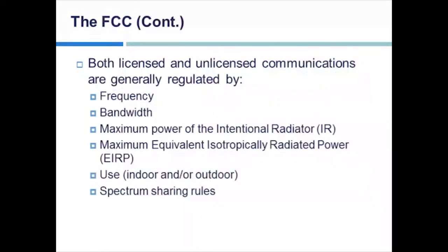When we talk about any communications, any frequencies, licensed or unlicensed, the FCC still has regulations we must abide by. These include the frequency being used, bandwidth information, and something we'll do some math on — the maximum power of the intentional radiator, basically the antenna or the equipment, and the maximum EIRP, or Equivalent Isotropically Radiated Power. With your access points, there is only so much total power we're allowed to use for communications.